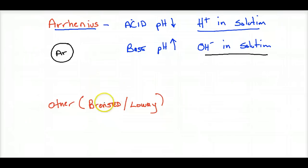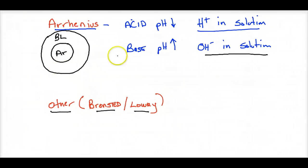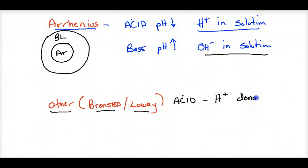There are other definitions. The Bronsted-Lowry definition — called just 'other' in Regents Chemistry — is more encompassing. Some substances change pH like acids or bases but don't fit the Arrhenius definition. Under this other definition, to be an acid you are an H⁺ donor; to be a base you are an H⁺ acceptor.